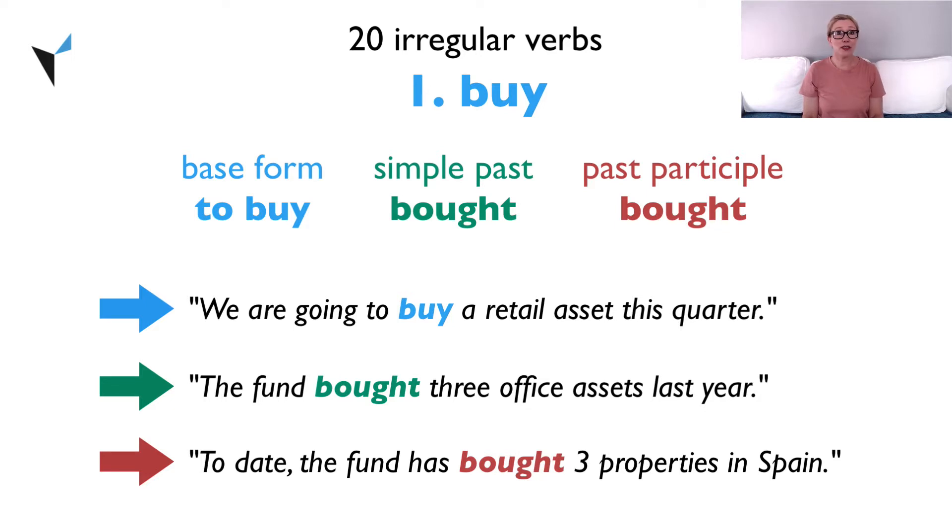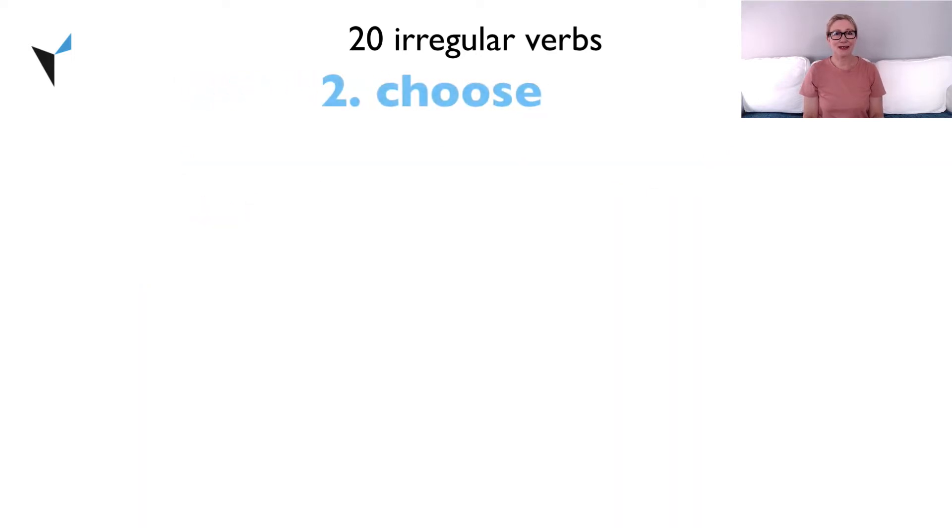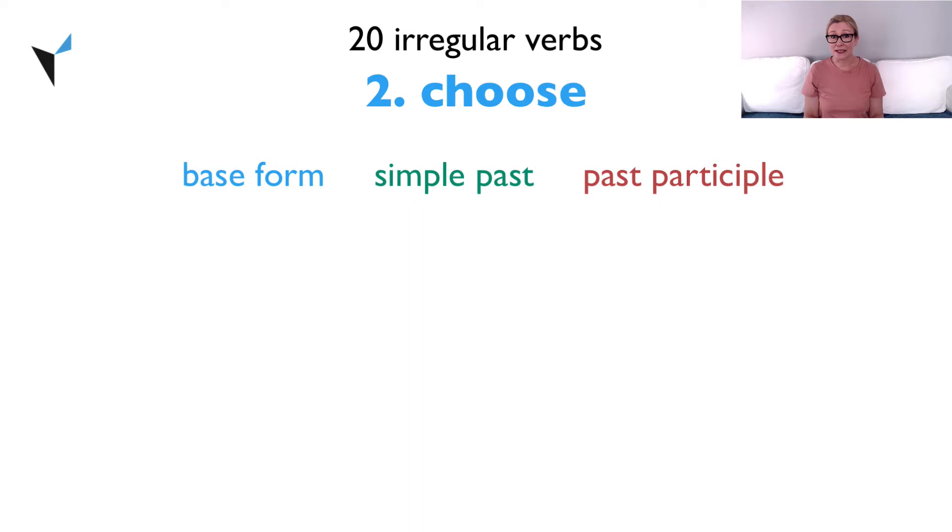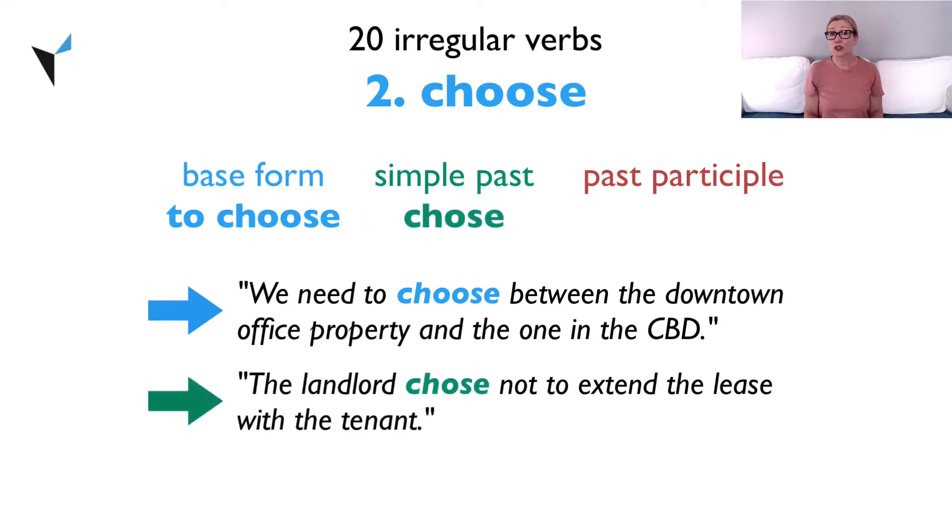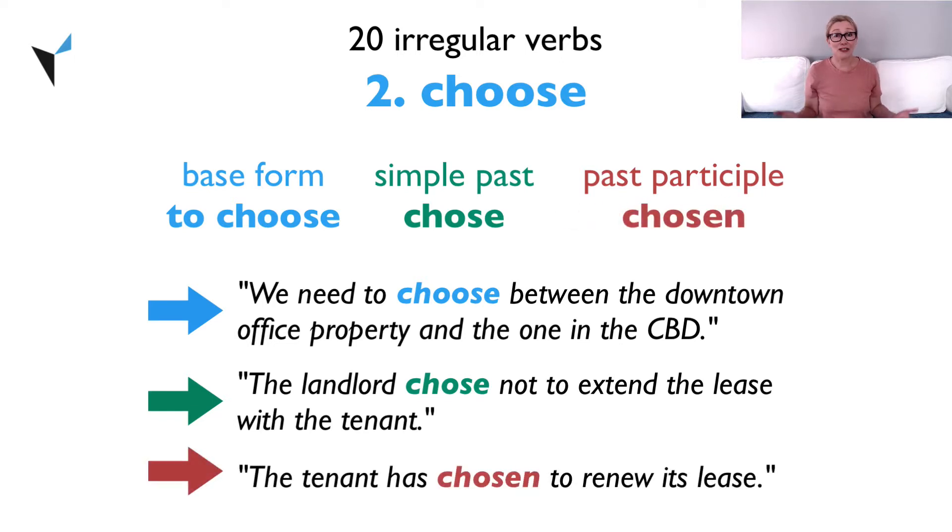Now on to verb two, choose. The base form is to choose. We need to choose between the downtown office property and the one in the CBD. The simple past is chose. The landlord chose not to extend the lease with the tenant. The past participle is chosen. The tenant has chosen to renew its lease.